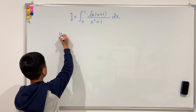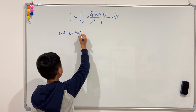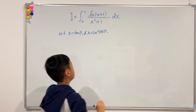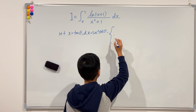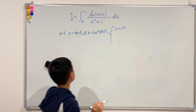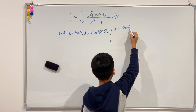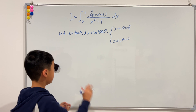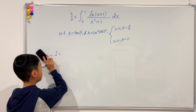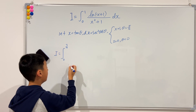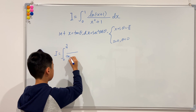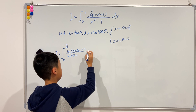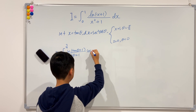So let x equal tangent theta, and dx will be sec squared theta d theta. We also have to convert the bounds. When x equals 1, theta equals pi over 4. When x equals 0, theta equals 0. So our new integral is: I equals the integral from 0 to pi over 4 of ln of (tangent theta plus 1) over (tangent squared theta plus 1), times sec squared theta d theta.